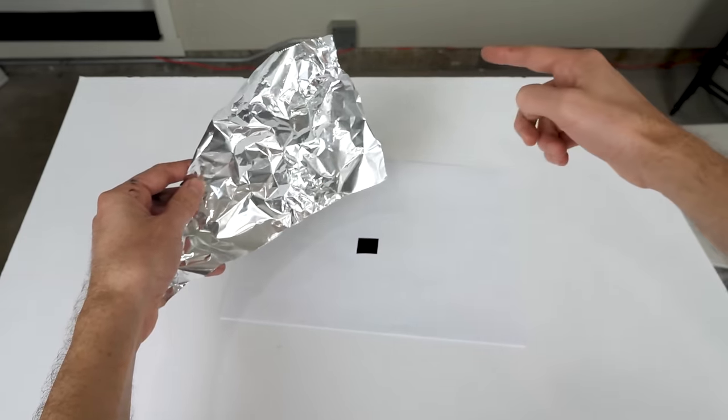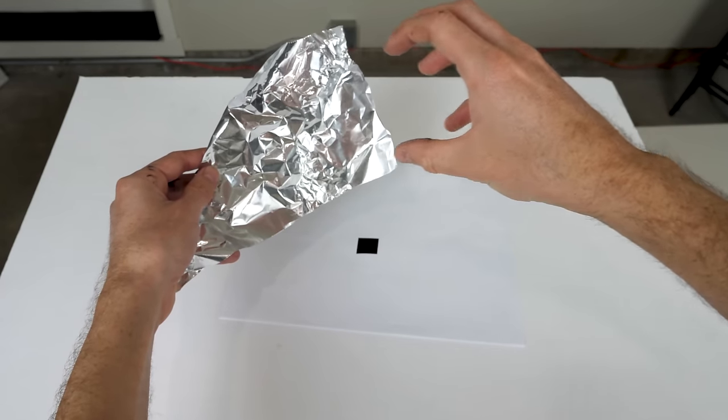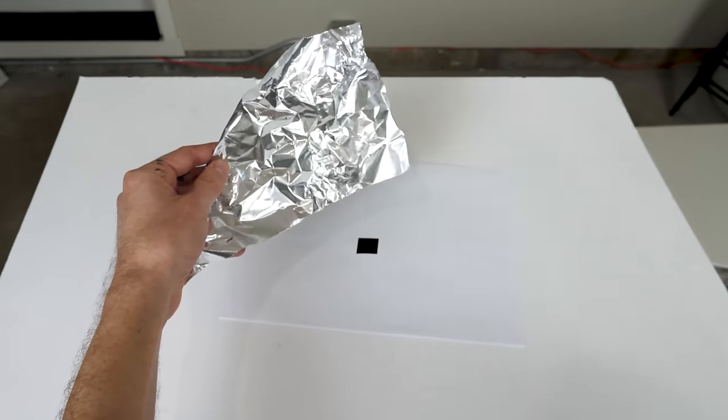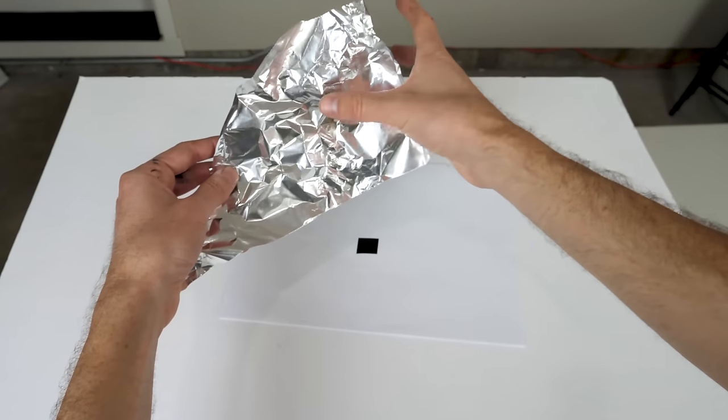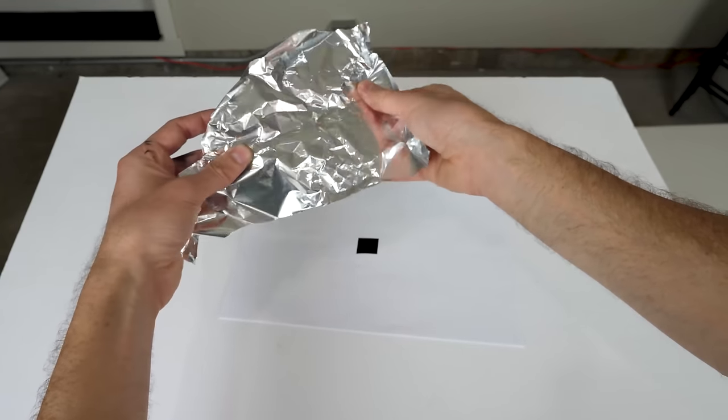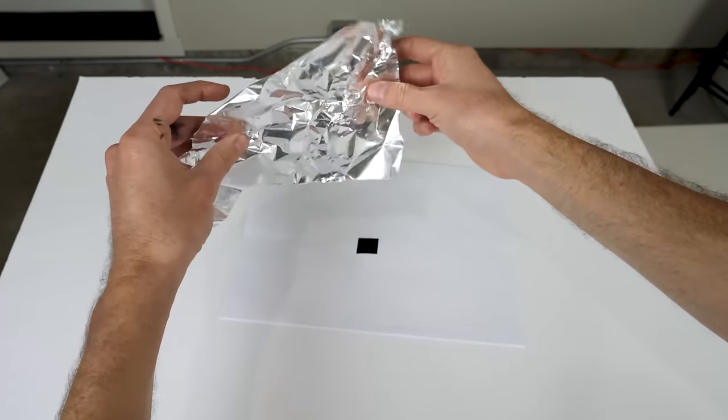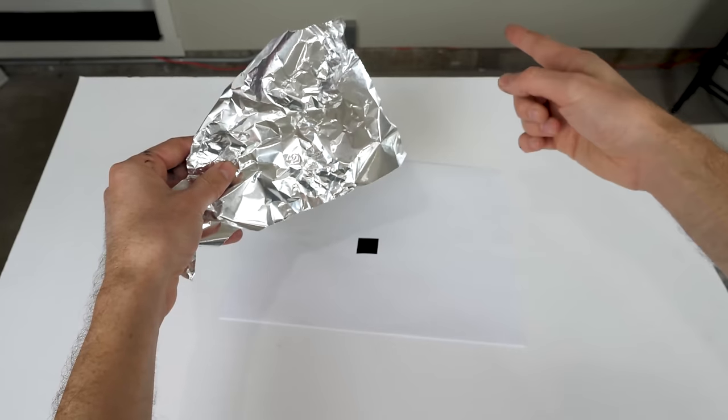And you should notice the difference between something emitting light and something reflecting light. So you can see that this reflects light. That means that it doesn't absorb it. So the light that hits it gets bounced off. It doesn't get absorbed. But if it were to emit light, that would mean that the light itself is coming from this material. So this does not emit light very well. It does reflect light well though.